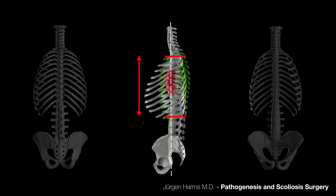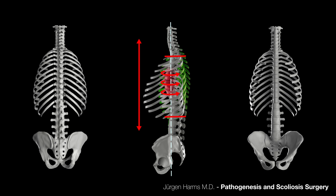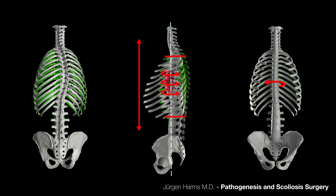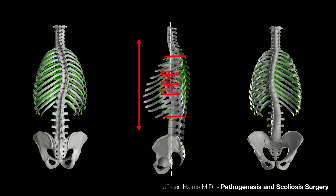The anatomy of the facet joints restricts the options for further bending forward. As a result, the spine moves with a sideways rotation starting from the apex. The sideways rotation is responsible for the outcome and increases the scoliosis. This forward movement combined with the sideways rotation is referred to as buckling or crankshaft phenomenon.